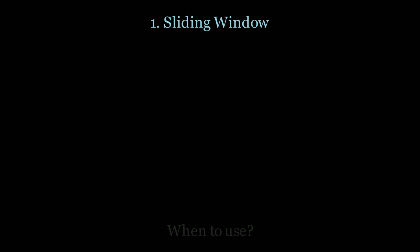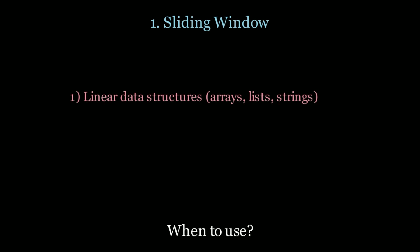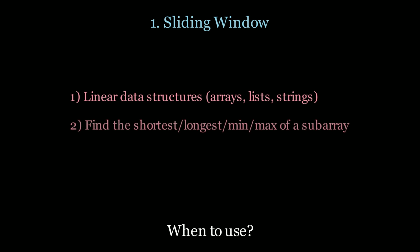The first pattern is the sliding window. Use this for linear data structures such as arrays, lists, and strings. Use this when you need to find the shortest, longest, minimum, or maximum of a subarray, and finally the subarray must satisfy some condition.